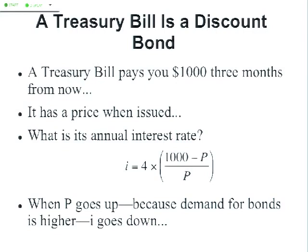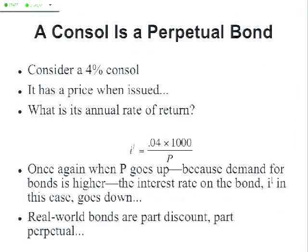Or take the opposite example. The United States government doesn't issue any consolidated security loans — consuls. Britain used to. A consul is a perpetual bond that never expires. When the British government issued consuls, it would say: here is a promise from the king of England to pay you, say, 40 pounds a year forever. People would bid in the auction, and the annual rate of return on a 4% consul with a face value of 1,000 pounds would be: take the 40-pound annual payment, divide by the price — that gives you the long-term nominal interest rate. And again, when P goes up because demand for bonds is higher, the long-term safe nominal interest rate IL goes down.